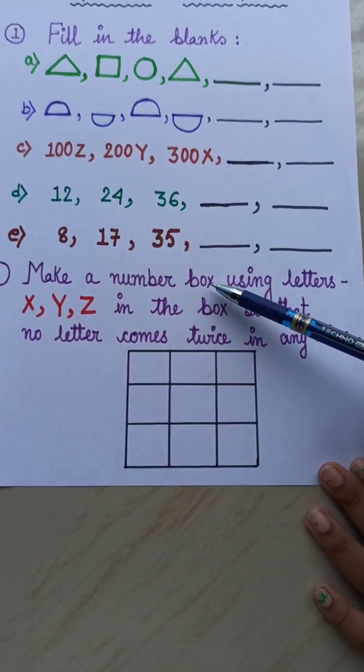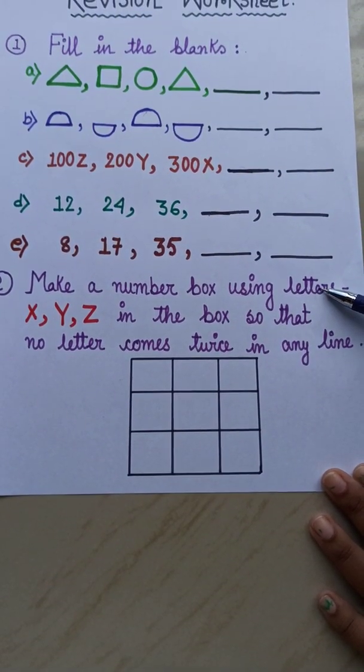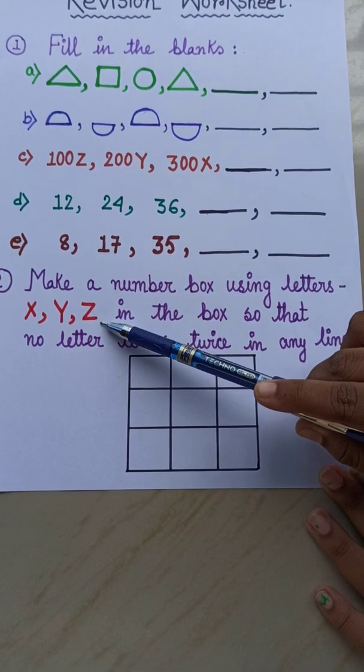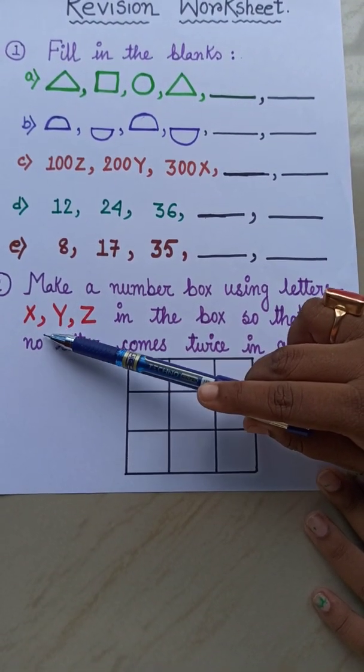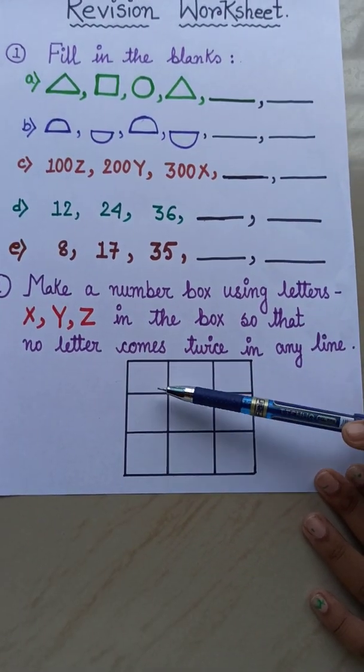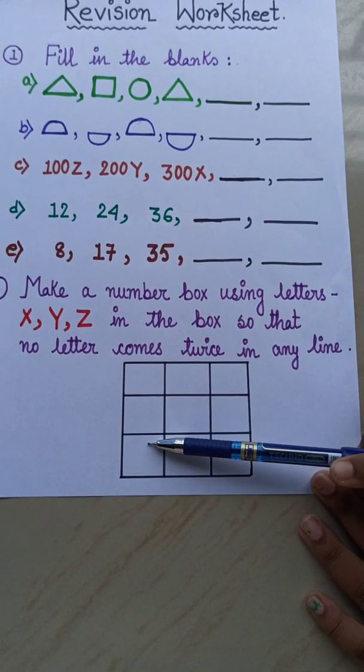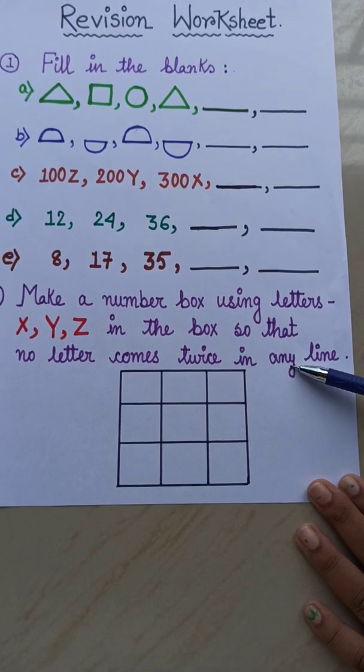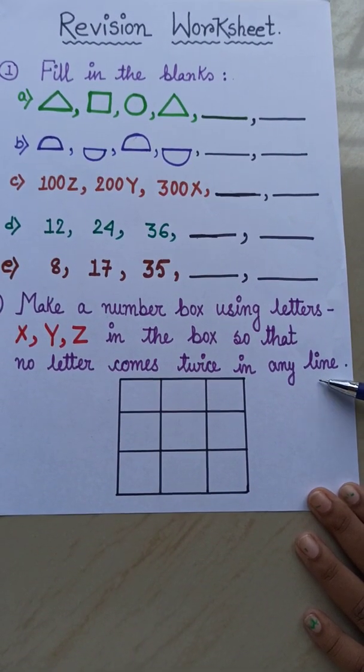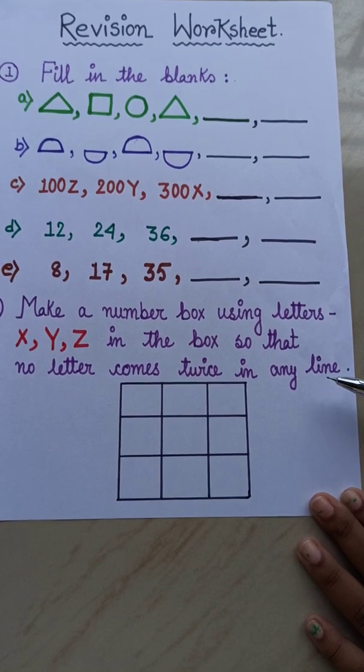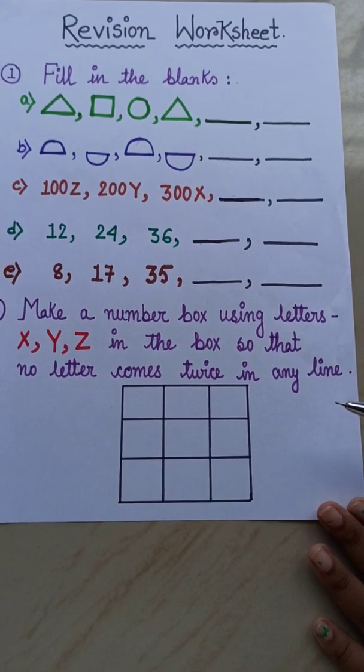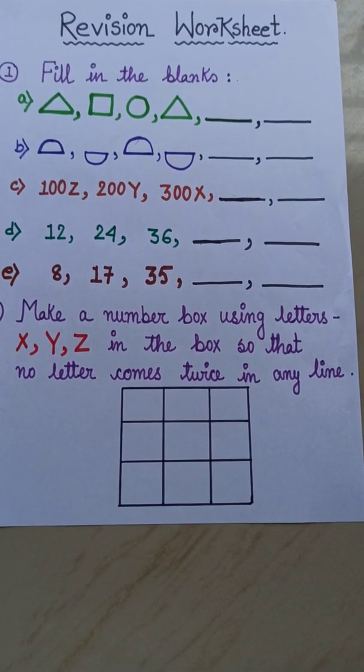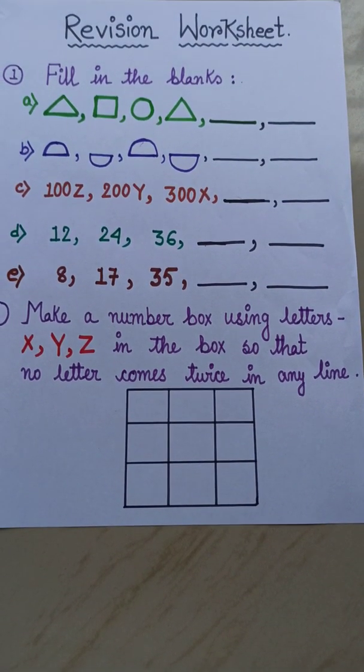Next is, make a number box using letters XYZ. Using these three letters X, Y and Z, you have to fill these number blocks. And the rule is, no letter comes twice in any line. No letter will come twice in any line.